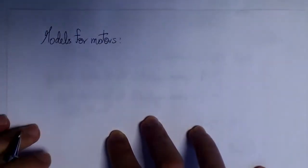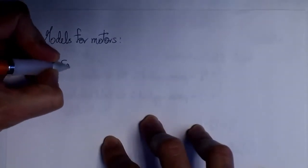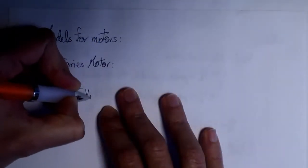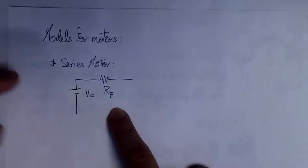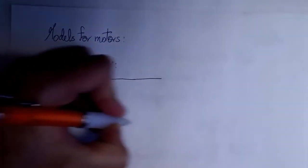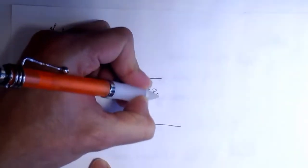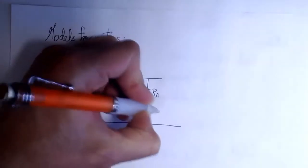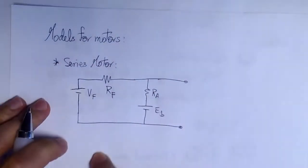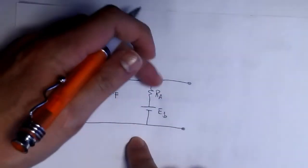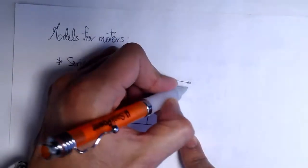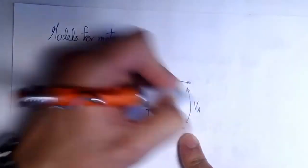Now let's talk about models for motors. We'll discuss two types. The first is the series motor. We apply power to the field windings and represent them with a resistor RF, which represents the total electrical resistance of the wire in the field windings. We connect the armature windings in series with the field windings, and RA represents the total resistance of the armature windings.